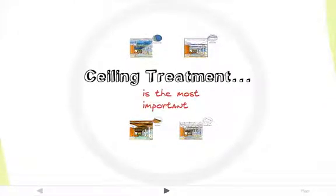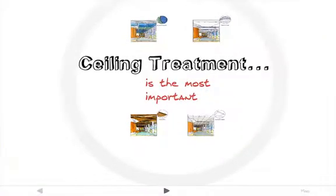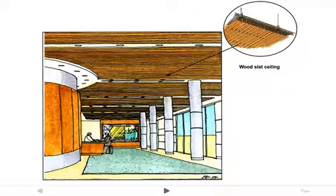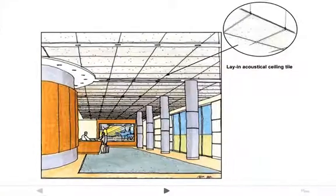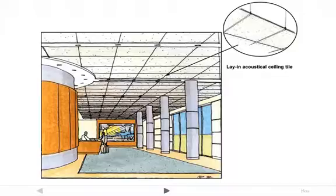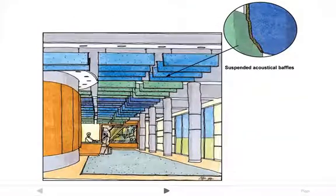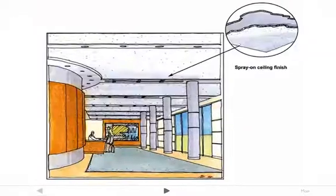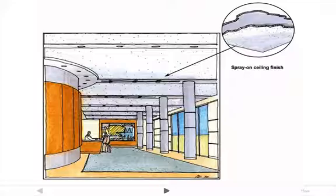The ceiling is the most important surface to treat for sound absorption. These next four images are different types of sound absorbing ceiling treatments that could be used in a building today: a wood slat ceiling, lay-in acoustical tile or drop ceiling, suspended acoustical baffles — which can get very decorative — or a spray-on ceiling finish.